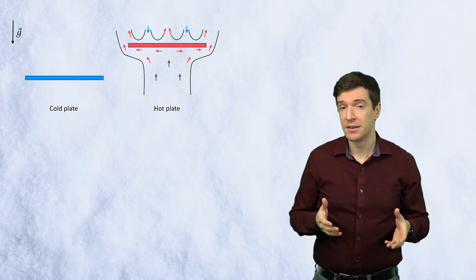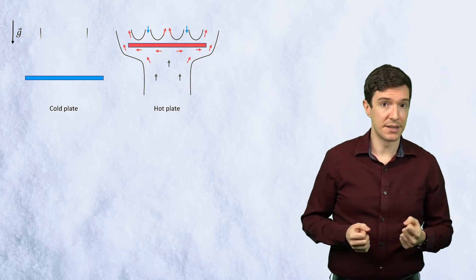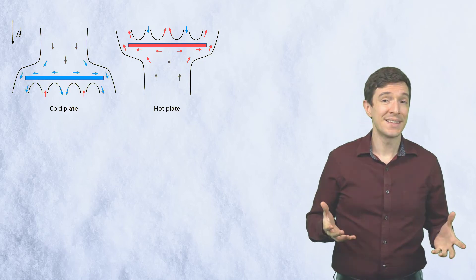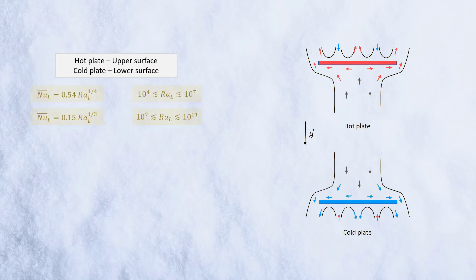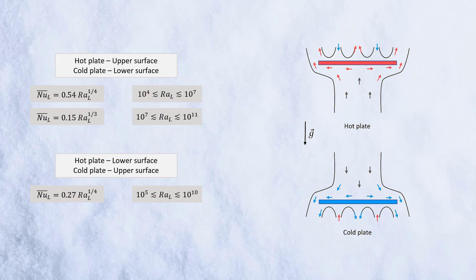The opposite pattern can be seen for a cold plate. Adams introduced these correlations for the two sides of the plates. The accuracy can be further improved if the characteristic length is defined as the ratio of the plate area by its perimeter.